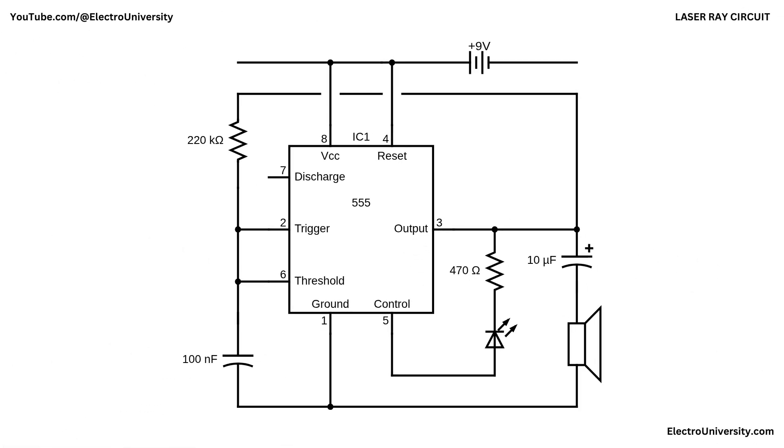Let's dive into the circuit and break it down step by step. This laser ray circuit uses a 555 timer IC configured in astable mode to generate a continuous square wave. Powered by a 9 volt battery, the 555 timer produces a pulsing output that simultaneously controls an LED and a small speaker to simulate a sci-fi laser ray effect.